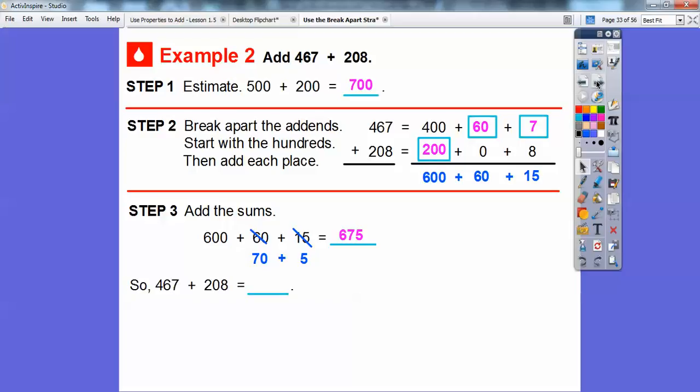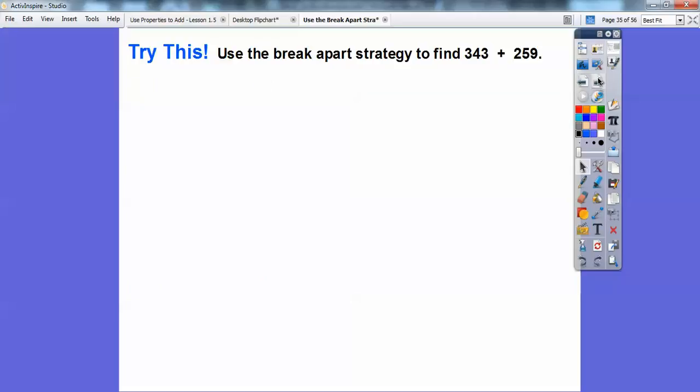So 467 plus 208 is 675, and is that close to our estimate? Yeah, it's pretty close. It's a little bit less than that, so it's close to our estimate. Let's try this. Use the break apart strategy to find 343 plus 259.